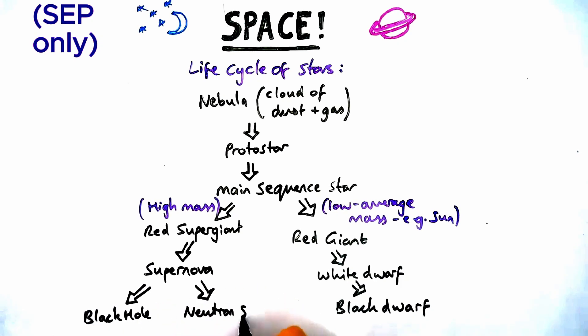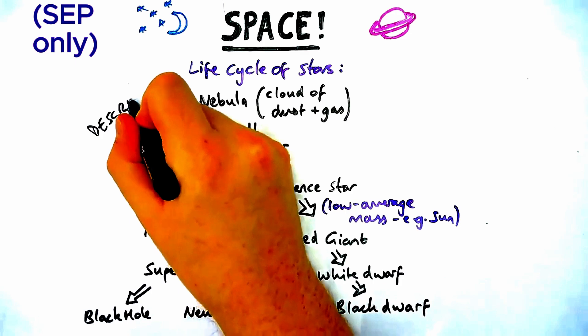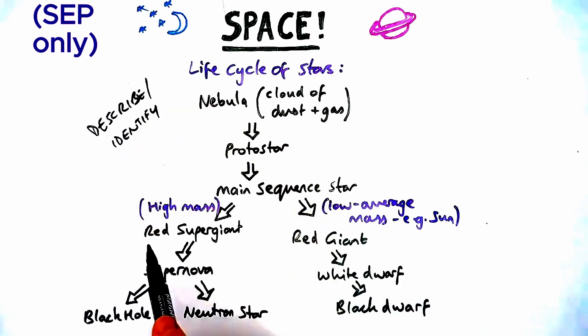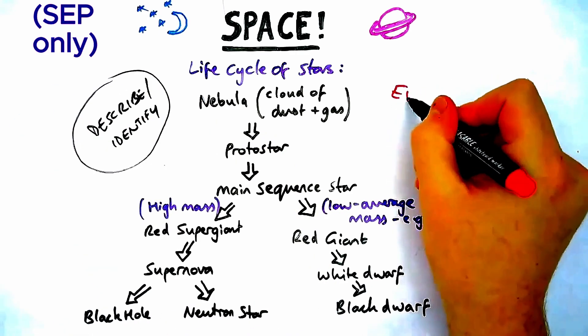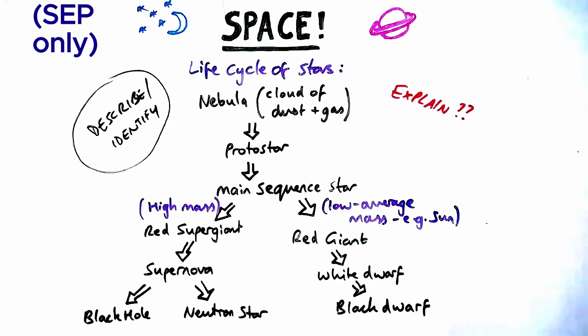A lot of people get tricked at GCSE into thinking that's enough to answer a six marker - it's not. You have to be able to not only describe the stages, but explain how to go from one stage to another. Why do these different stages form? Why don't stars stay in the main sequence forever?